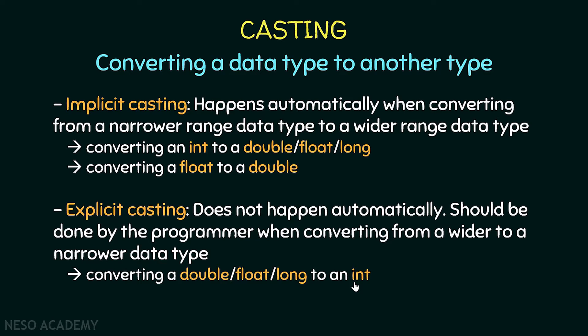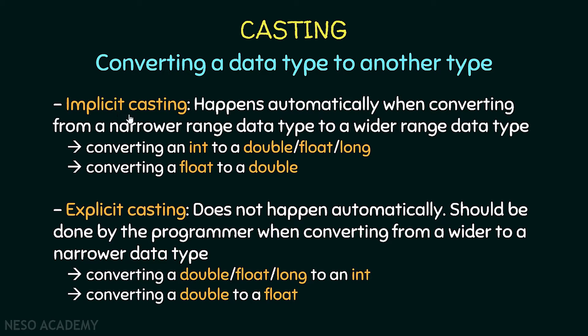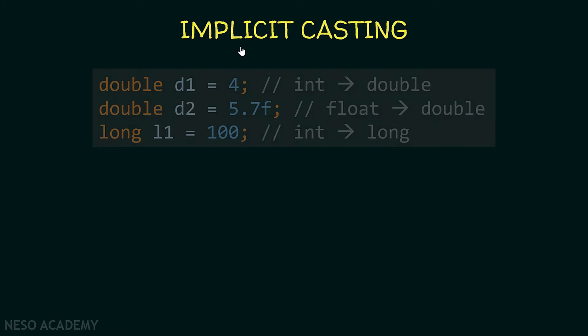Java doesn't automatically do the conversion when data might be lost — the programmer must tell Java to convert, even if data will be lost. Another example: converting from a double to a float may also lose data because a double has a wider range and is more precise than a float. So when Java does casting automatically it's implicit; when the programmer does it, it's explicit casting.